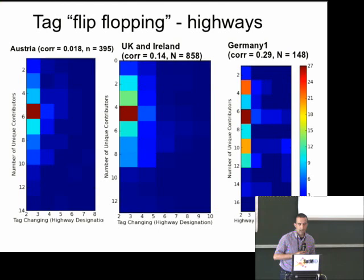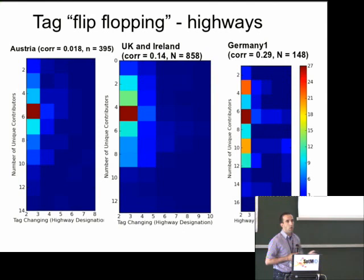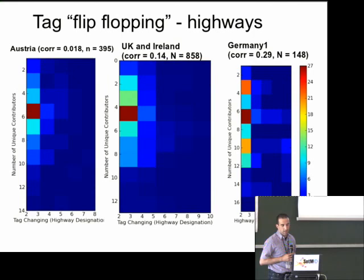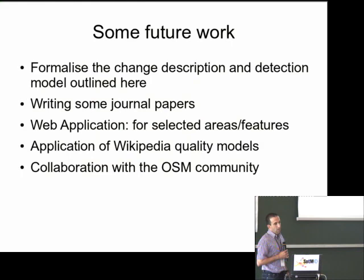Tag flip-flopping — highways changing their designation as users enter the project — is a notable finding. There's actually no correlation between more users editing a way and the number of tag changes. We have an example in Germany where there's a tag war over a particular highway with 27 different changes of designation.